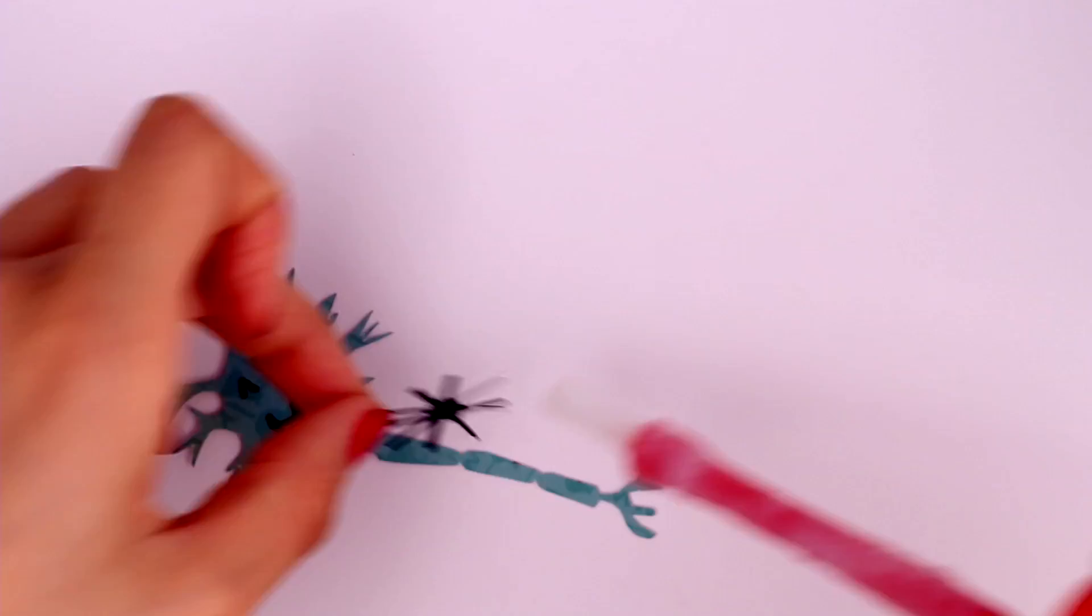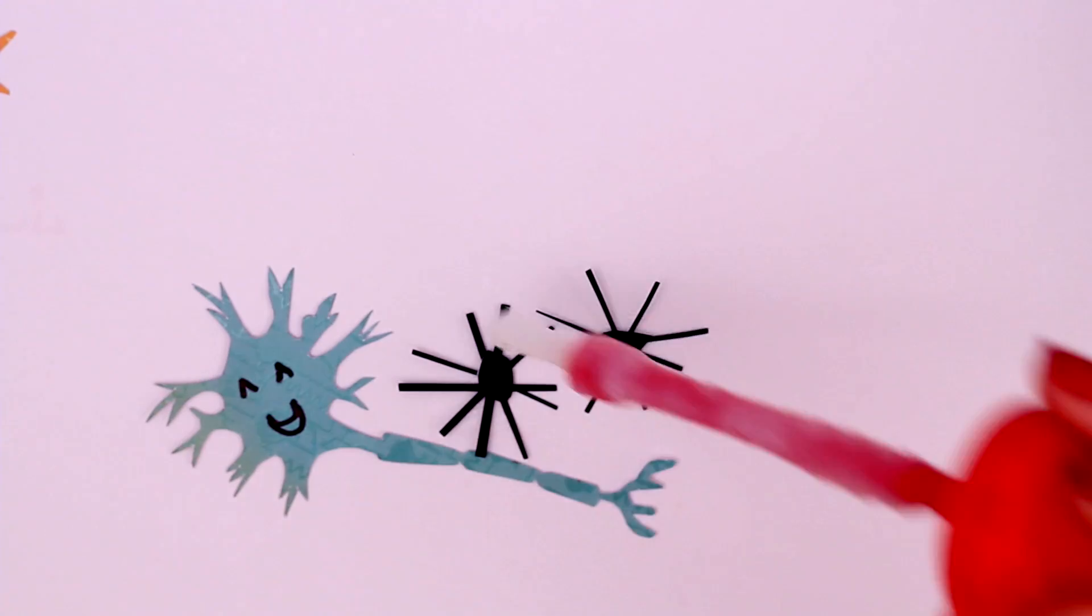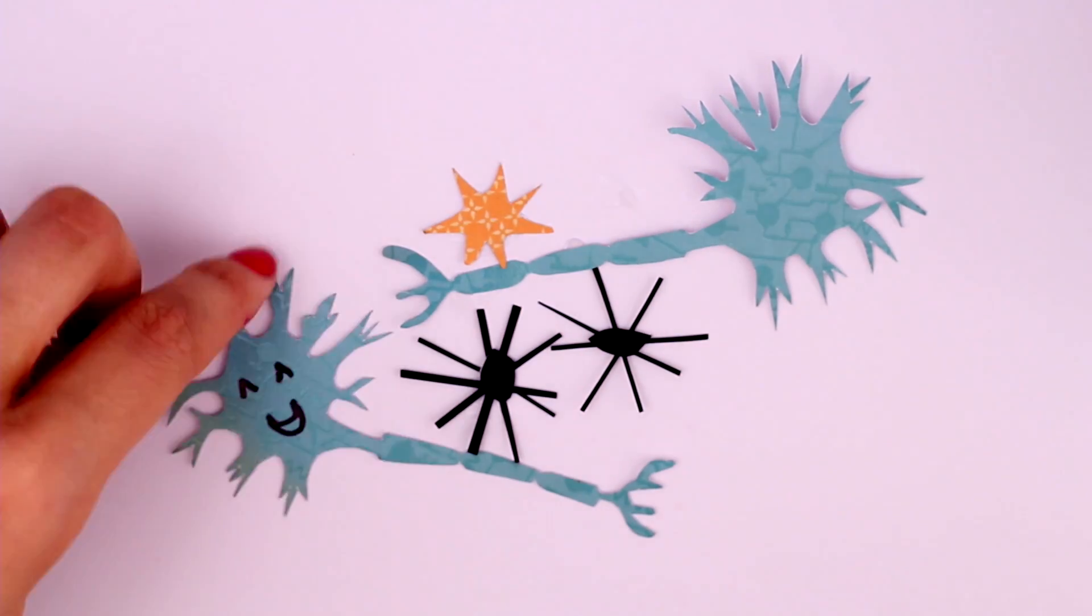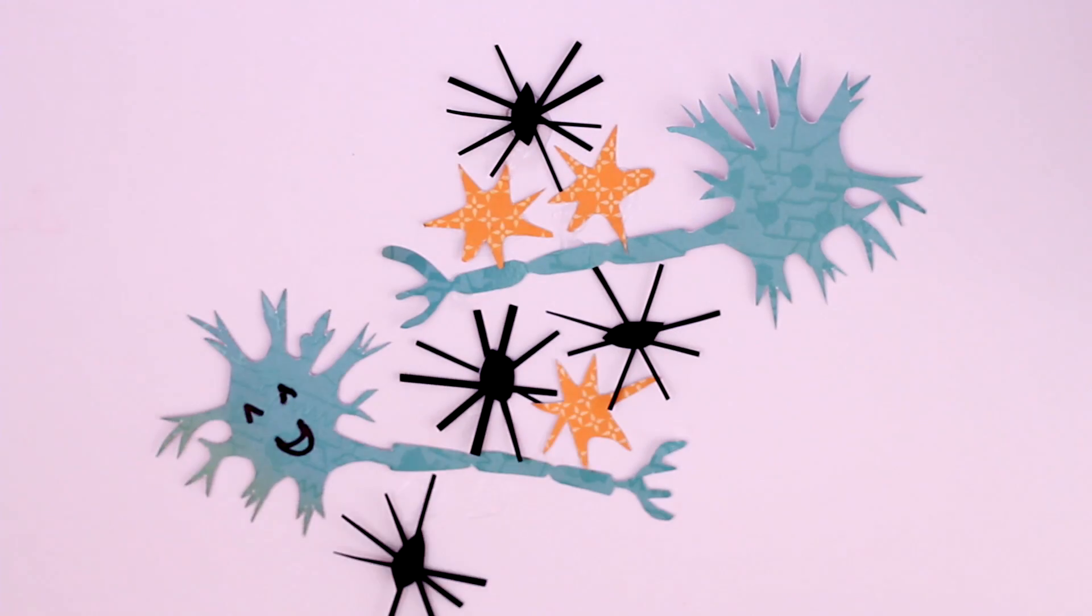Glia is Greek for glue, so glial cells were thought of as the sticky stuff that holds groups of neurons together. Nearly 90% of the cells in our brains are glia, the other 10% are neurons.